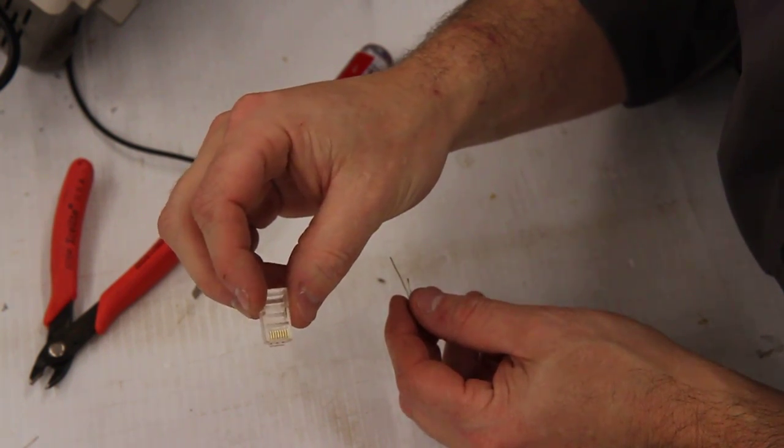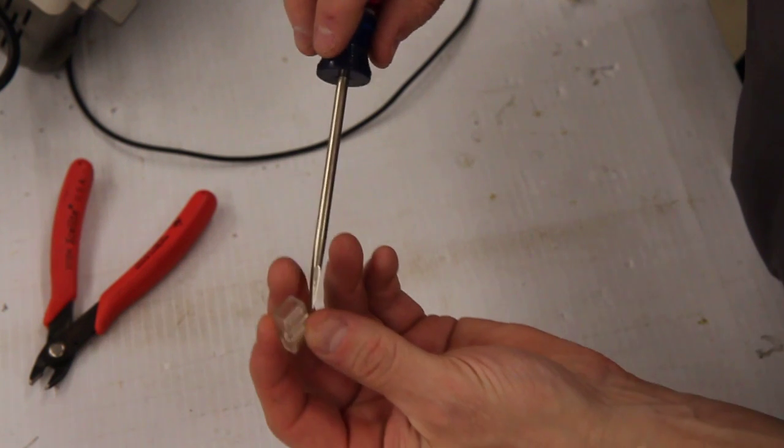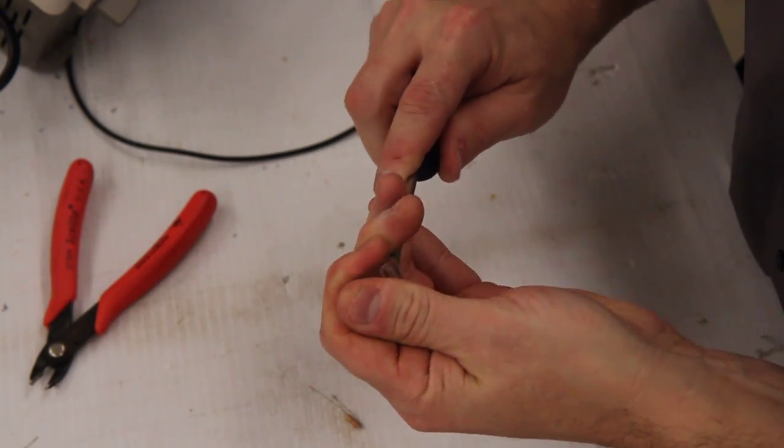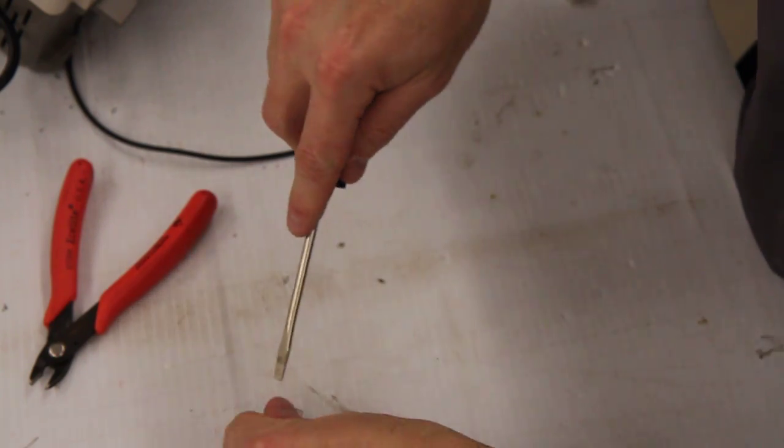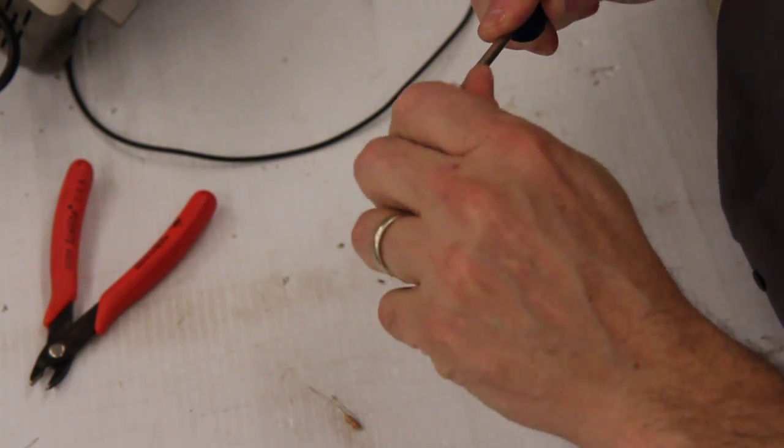I have a standard crimp on cat5 connection. I'm just going to modify it slightly. There is a strain relief in here and that will crush, in some cases, the connector or the resistor. So I'm just going to take that, pop that out, bend it back up here.